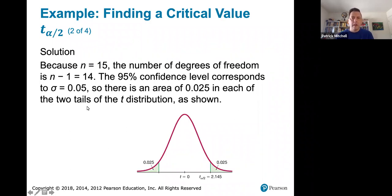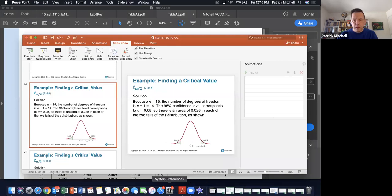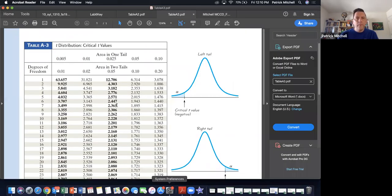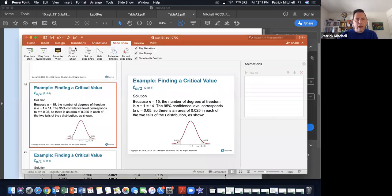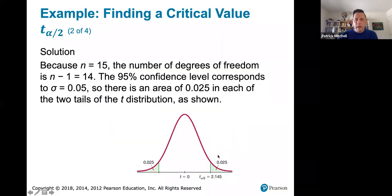So I'm going to show you two different ways to find this critical value, first by using the table. This is table A3. You just need to know two things. You need to know what's the area in one tail, and we just said that's 0.025. And then down here on the side, you go down to the number of degrees of freedom, which is 14. And where that row and that column meet, I see a 2.145, which is how they got this answer here. So the T score that cuts off the top two and a half percent of the distribution is 2.145.